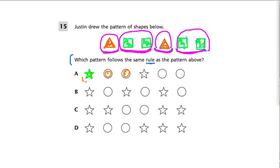So instead of a triangle and two squares, we have a star and two circles. So one type of shape, followed by two of another. And then one type of shape, and two of another. So this is the same pattern. I would pick A. Even though there are different shapes, it follows a similar rule or type of pattern.